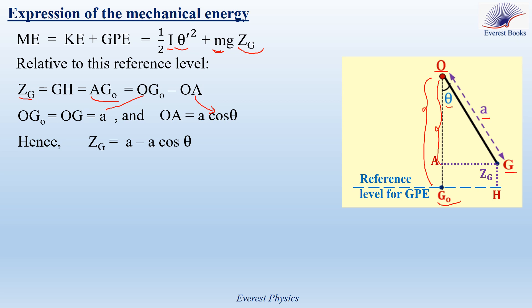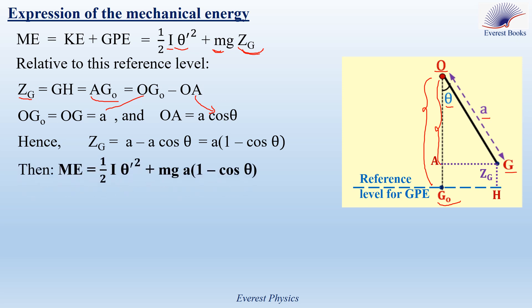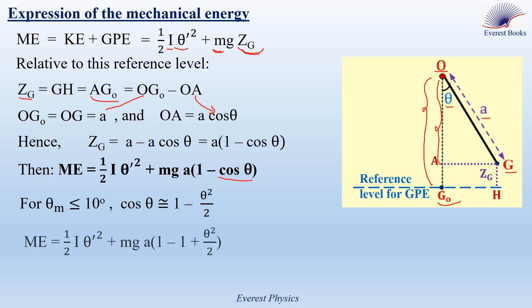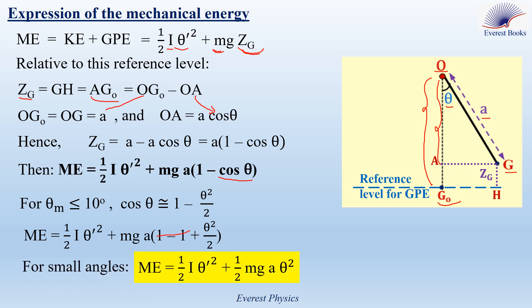So Z of G is equal to A minus A cosine theta, which equals A times (1 minus cosine theta). Replacing Z of G by A(1 minus cosine theta), we get the expression of ME as: ME equals one-half I theta-prime squared plus MgA(1 minus cosine theta). For small angles, where the maximum angle is less than or equal to 10 degrees, cosine theta is approximately equal to 1 minus theta-squared over 2. Substituting, the gravitational potential energy becomes MgA times (1 minus 1 plus theta-squared over 2), and since 1 minus 1 equals 0, we get the final expression: ME equals one-half I theta-prime squared plus one-half MgA theta-squared.